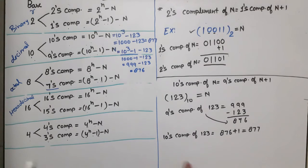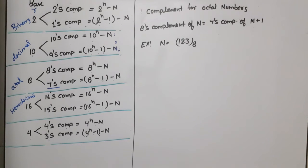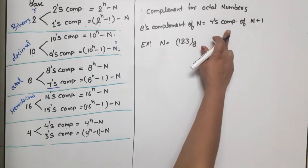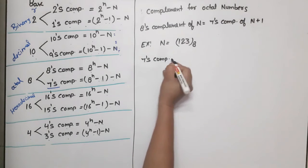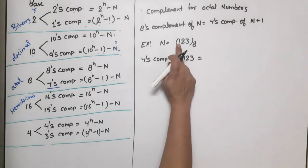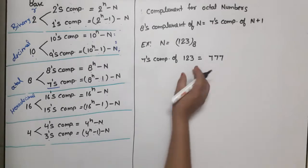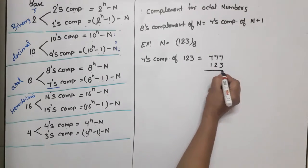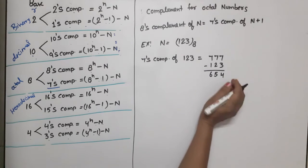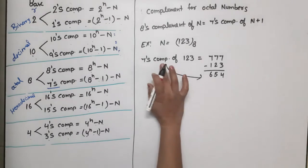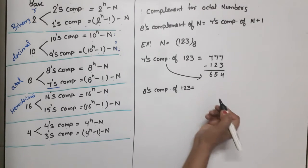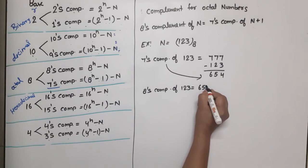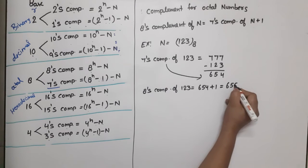Now for octal: we find 8's complement and 7's complement. 8's complement = 7's complement of N plus 1. For 7's complement of 123 (octal): write three 7s — 777 — and subtract 123, giving 654. So 7's complement of 123 is 654. Then 8's complement of 123 = 654 + 1 = 655.